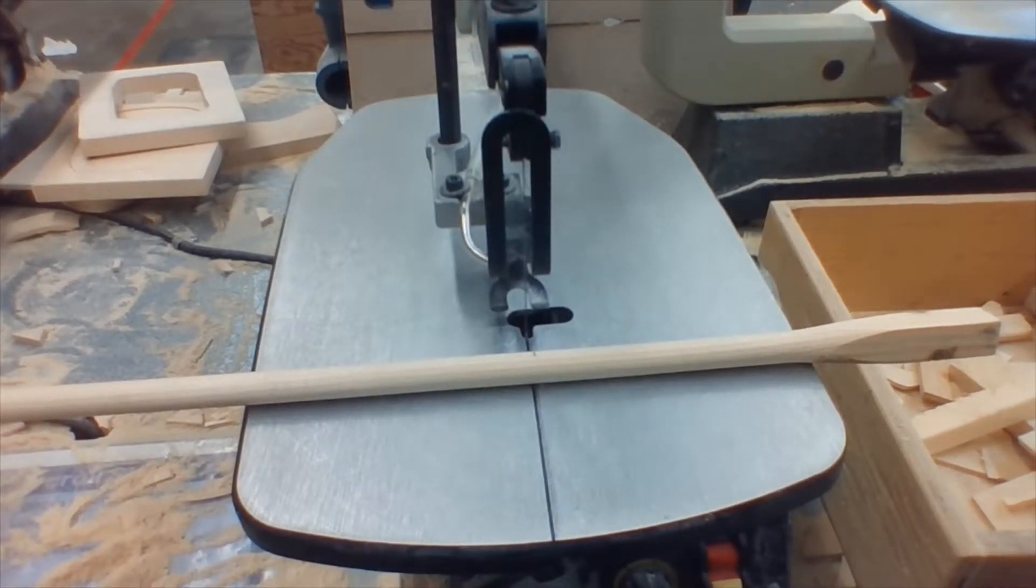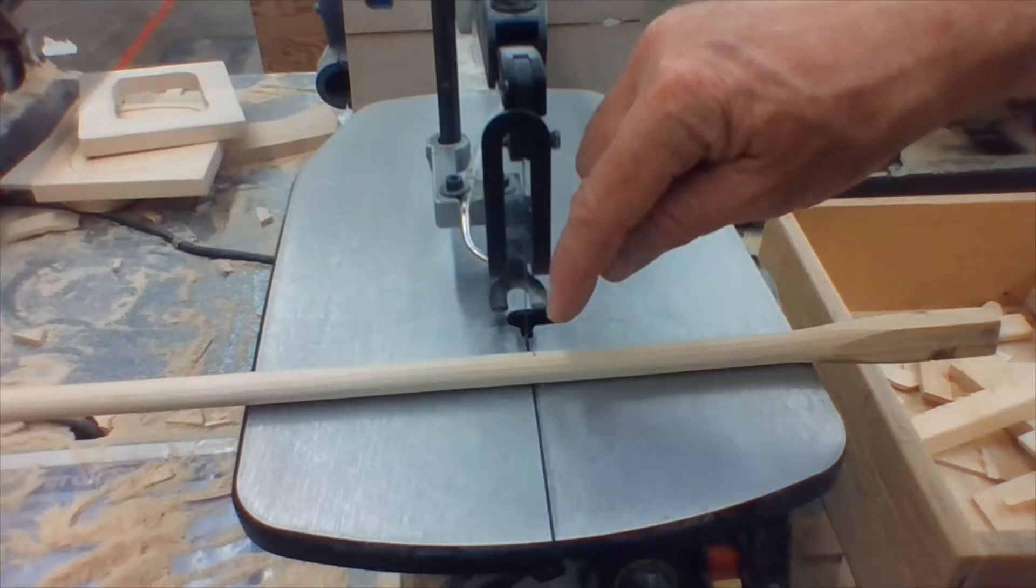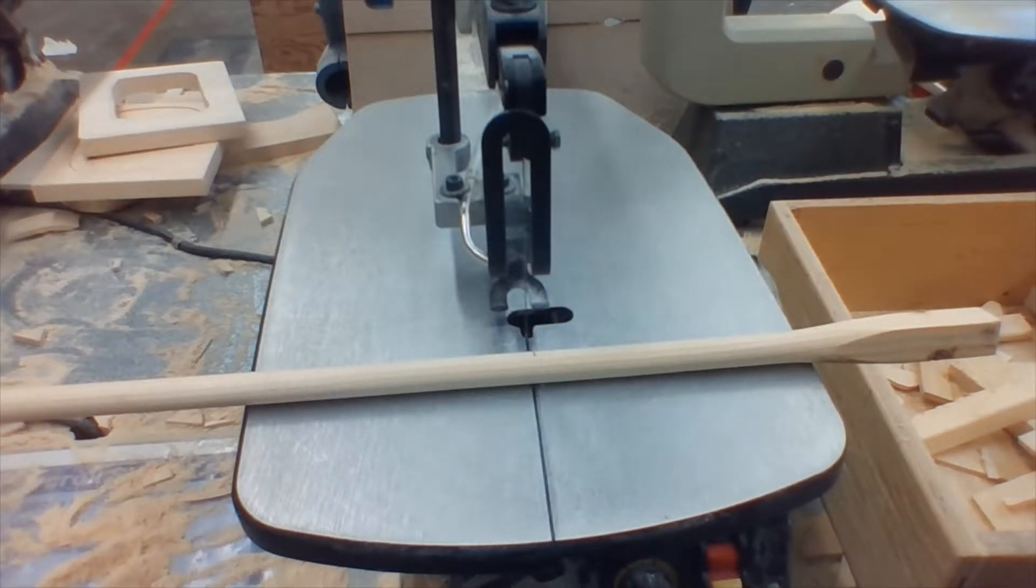At the scroll saw, put your mark on the dowel so it lines up with the cut line on the table. Do your very best to cut straight through along the line.